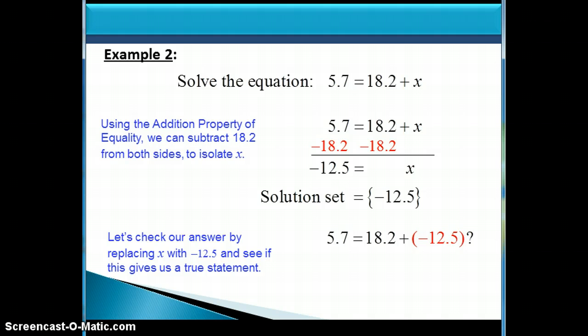So is it true that 5.7 is equal to 18.2 plus negative 12.5? Well, do the addition on the right. 18.2 plus negative 12.5 adds up to 5.7. And of course, 5.7 is equal to 5.7. This is true. So negative 12.5 is, in fact, a solution to our original equation.